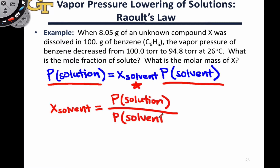And because vapor pressure lowering occurs when we dissolve a solute in a solvent, the vapor pressure of the solution will always be lower than the vapor pressure of the pure solvent, so x_solvent will always be less than 1, as it must be, since it's a mole fraction.